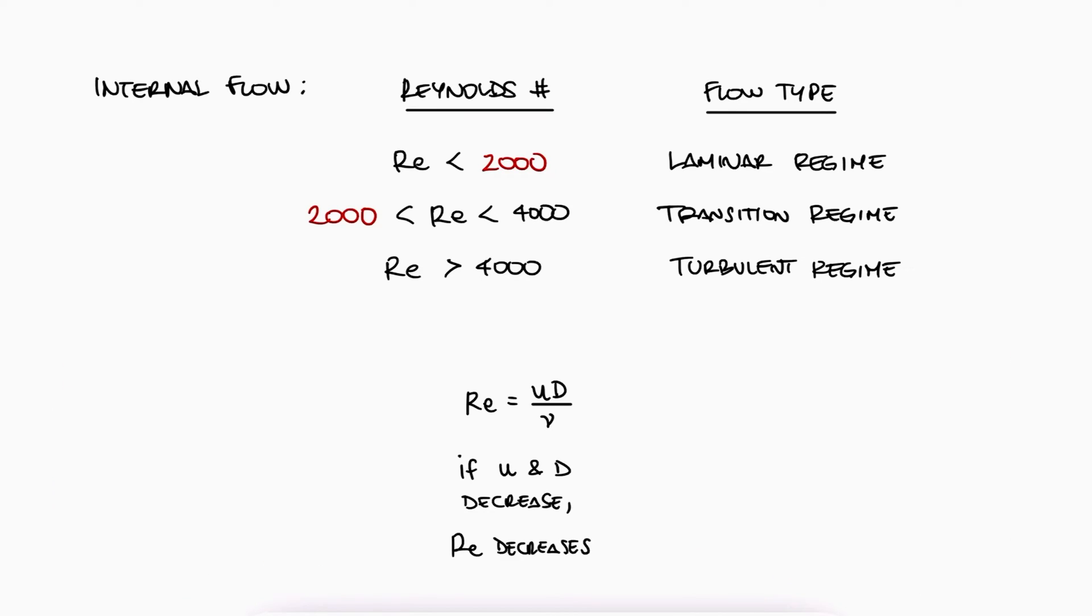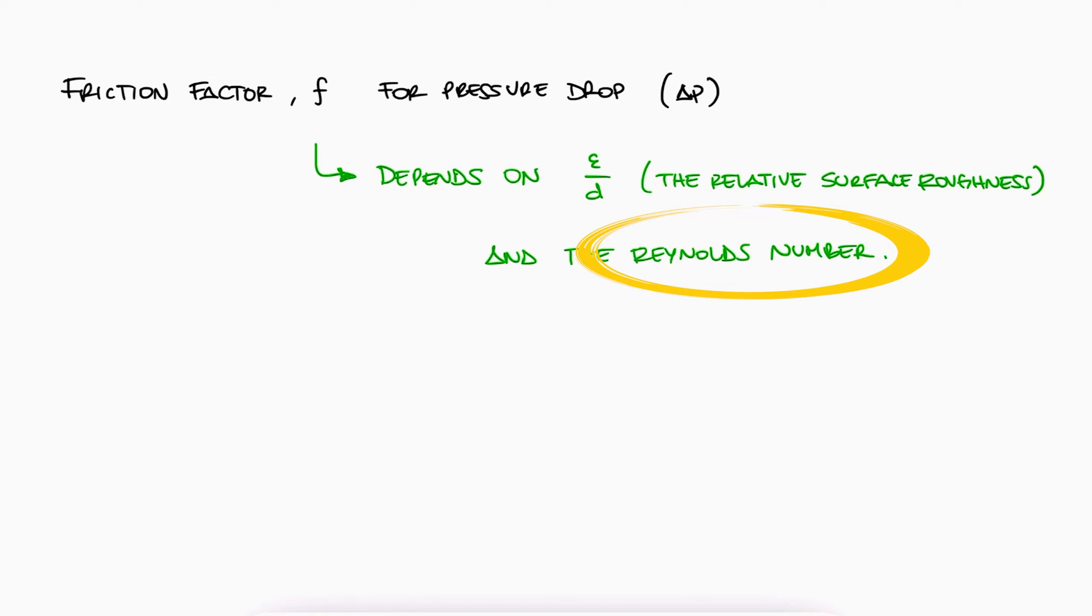One of the first applications of Reynolds number is that the friction factor causing energy losses inside a pipeline is a function of both surface roughness and the Reynolds number. This is known as the Moody chart.